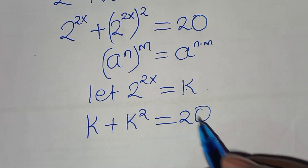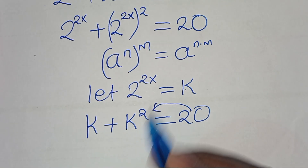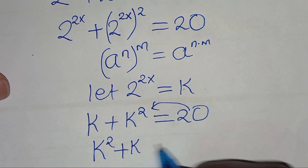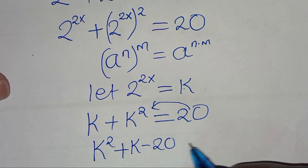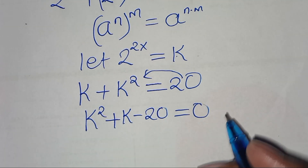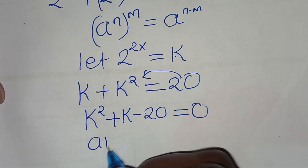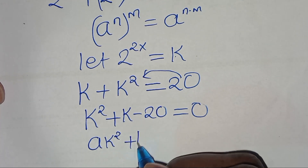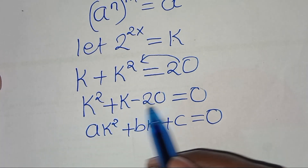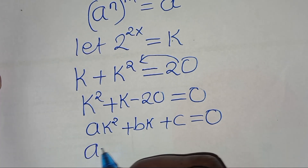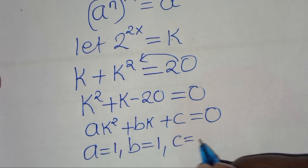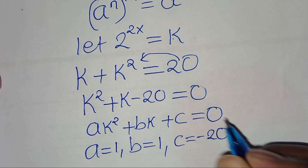Rearranging, we have k squared plus k minus 20, this is equal to 0. This is a quadratic equation of the form ak squared plus bk plus c equals 0, where a is equal to 1, b is equal to 1, and c is equal to minus 20.